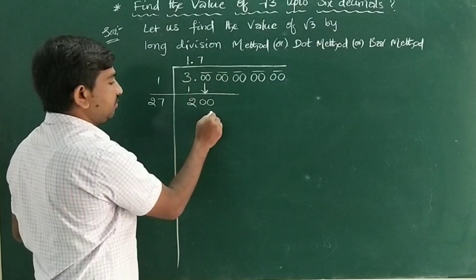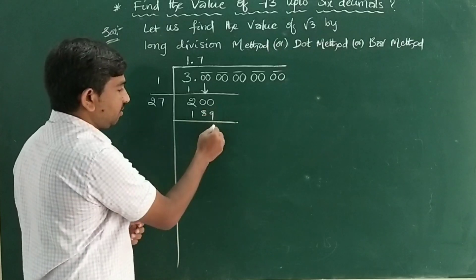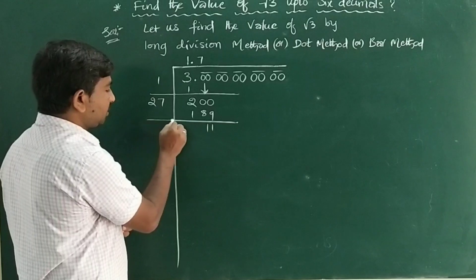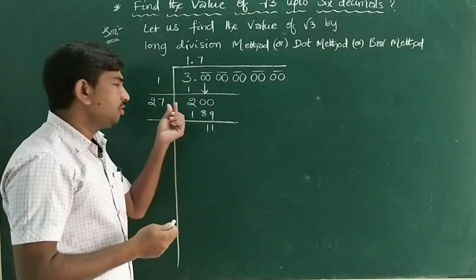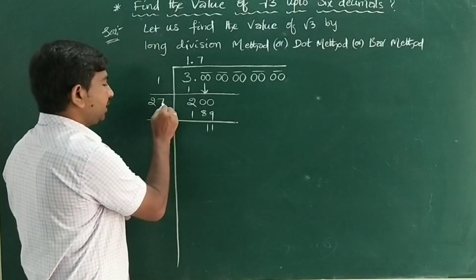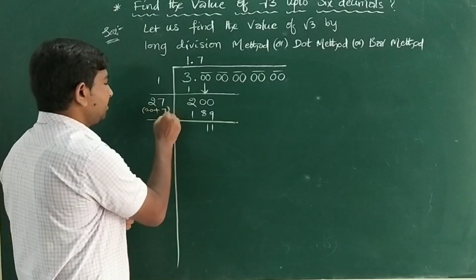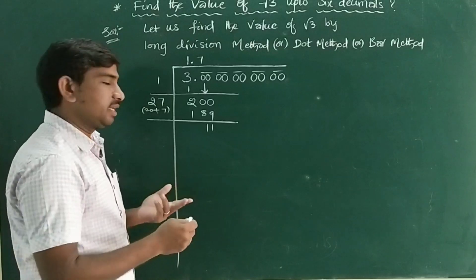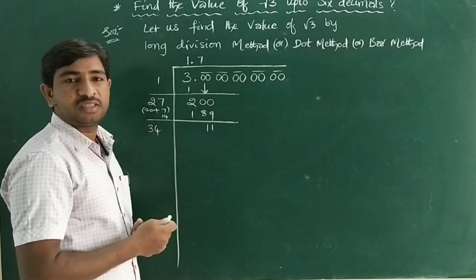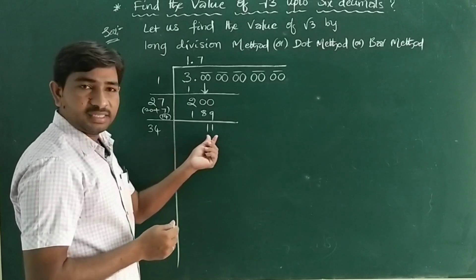I said, if you want to multiply any number, take it both times - as divisor and quotient. So 27×7: 7×7 is 49, 7×2 is 14 plus 4 is 18. Subtract: you get 11. Now, this is the most important point: 7 is doubled. If 7 is doubled, you get 14. This 27 can be written as 20 plus 7, and 7 doubled is 14, so it becomes 34.